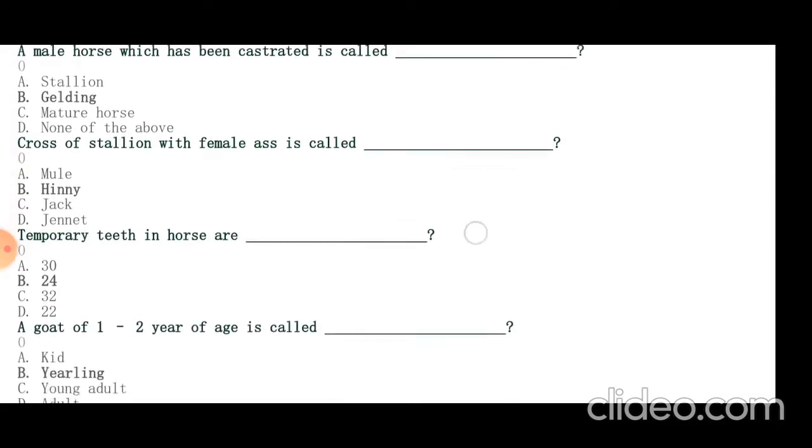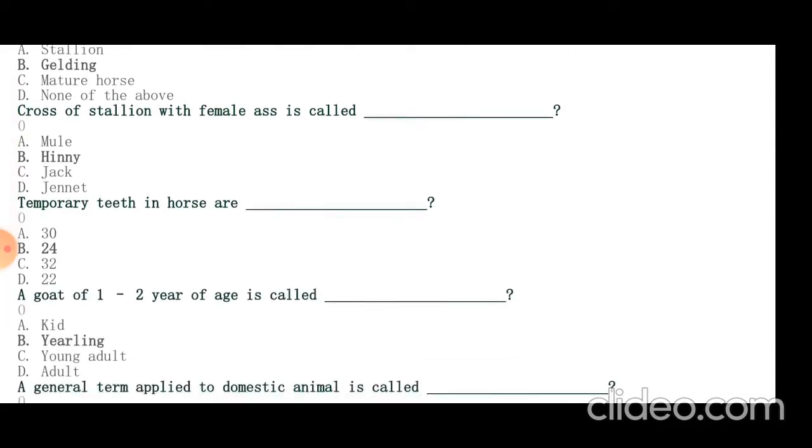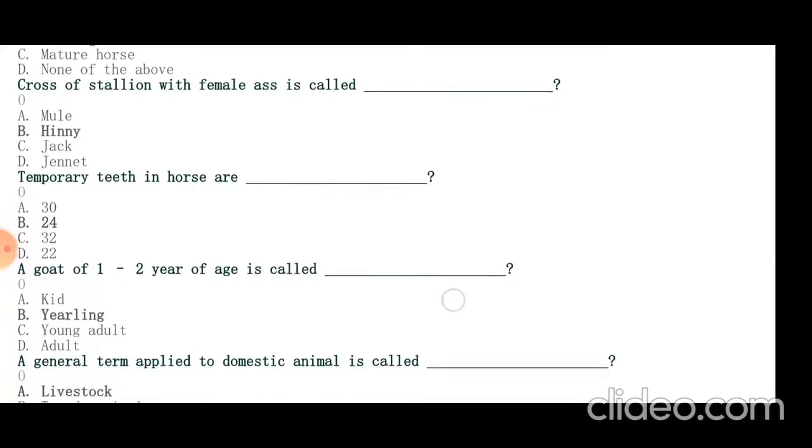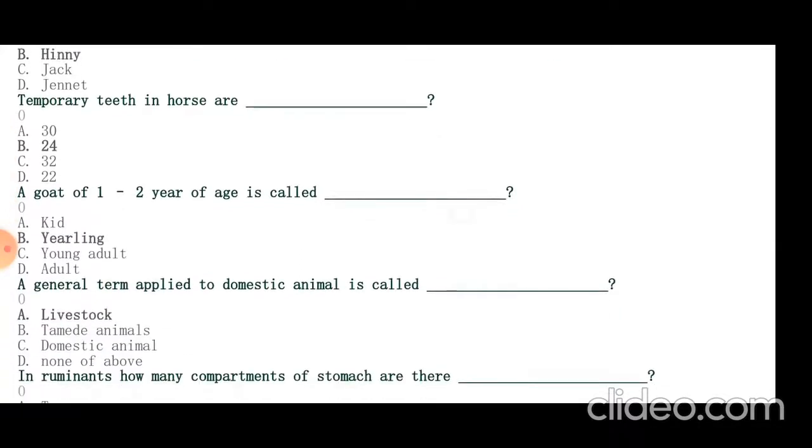Temporary teeth in horse are 24. A goat of 1 to 2 years of age is called yearling. A general term applied to domestic animals is called livestock.